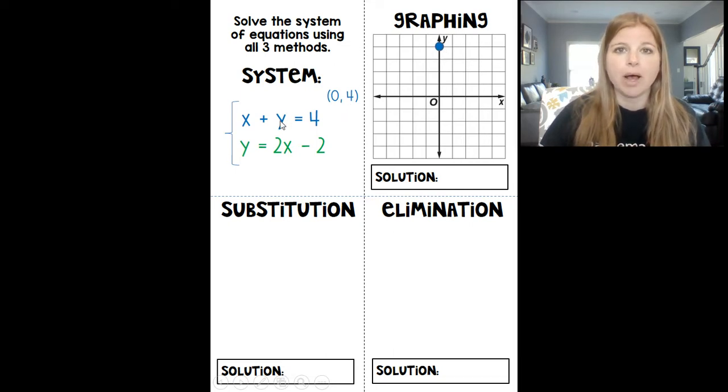If I plug in a 0 for y, x plus 0 equals 4, that would mean that x is actually 4. So my intercepts are 0, 4 and 4, 0. And if I connect those points, I get that nice line. If I had rearranged this equation, it would have looked like y equals negative x plus 4. So y intercept at 4, a slope of negative 1, and I would get the exact same line.